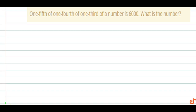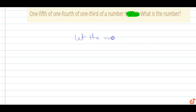In this question, one-fifth of one-fourth of one-third of a number is six thousand. What is the number? Let the number be X.